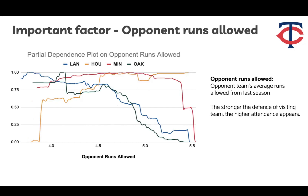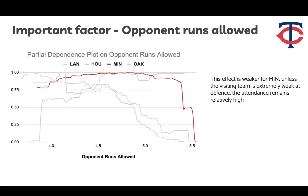The last important factor is opponent runs allowed, a metric for defense where a higher score means weaker defense. For most teams, a stronger visiting team defense correlates with higher attendance, making it a good marketing content angle. However, this effect is weaker for Minnesota Twins — attendance remains relatively high unless the visiting team is extremely weak at defense — indicating that opponent runs allowed may not be a useful marketing focus for them, as Minnesota fans show no obvious preference for visiting team defense performance. These partial dependence plots can be generated for every feature and every team, so all recommendations can be customized team by team.